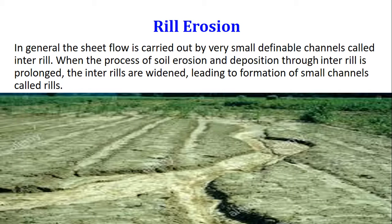Next is rill erosion. In general, sheet flow is carried through very small definable channels called interrills. When the process of soil erosion and deposition through interrills is prolonged, the interrills are widened, leading to the formation of small channels called rills. In this image, you can see the formation of rills on the land.